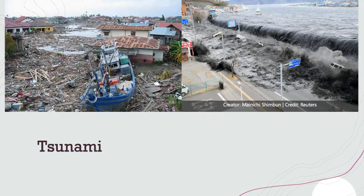Tsunami are rare, but can be extraordinarily deadly and destructive. In Southeast Asia and Japan, hundreds of thousands of people were killed by tsunamis triggered by the 2005 Indonesia and 2011 Japan earthquakes. A tsunami wave can be triggered by the sudden offset of the seafloor due to fault movement, which in turn disrupts the ocean surface, making a very long and fast-moving wave. Because the wavelength is so long, a single wave contains a huge volume of water with huge mass and momentum that can easily destroy structures and kill people.